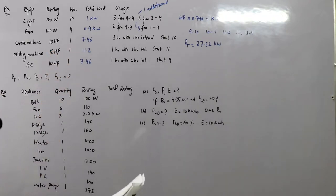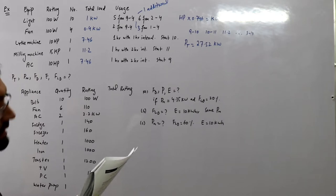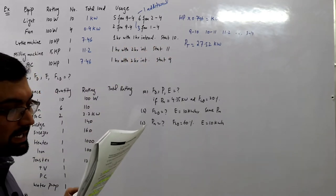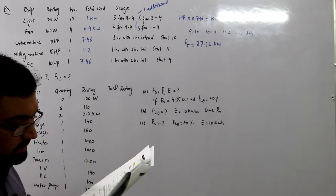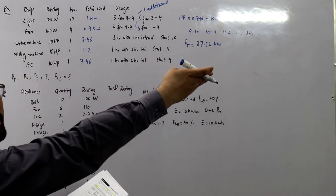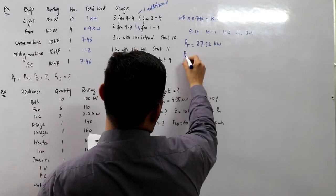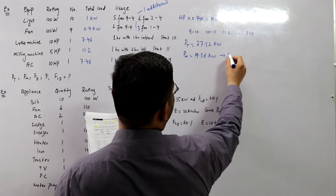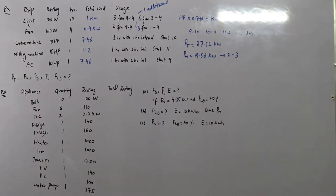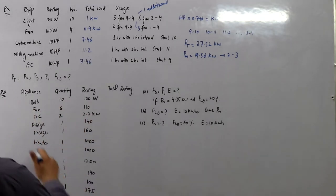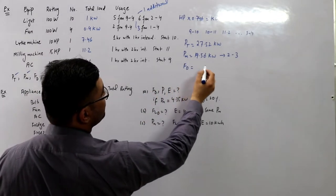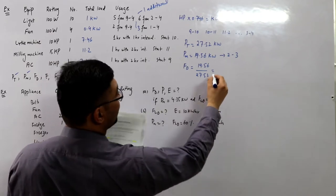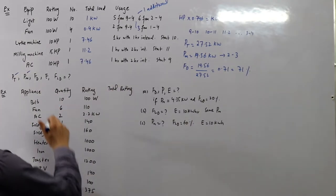The maximum demand is found on an hourly basis. The maximum demand is 19.56 kW, occurring between 2 to 3. This was seen in the previous video example. The demand factor fd = pm / pt = 19.56 / 27.52, which equals 0.71, or 71 percent.